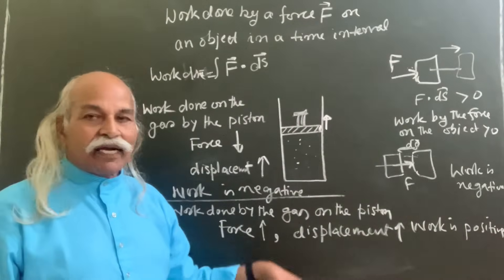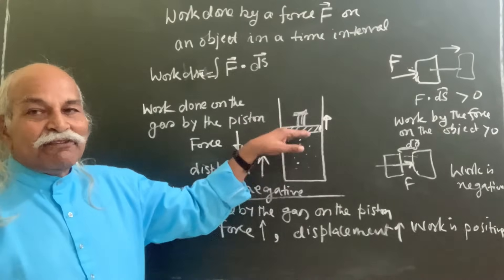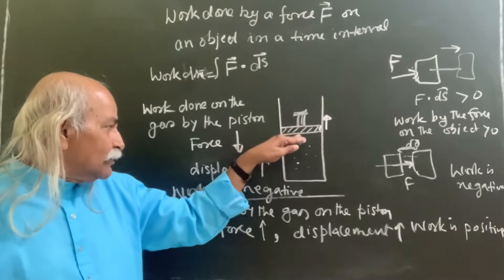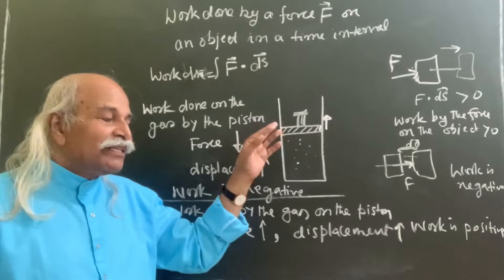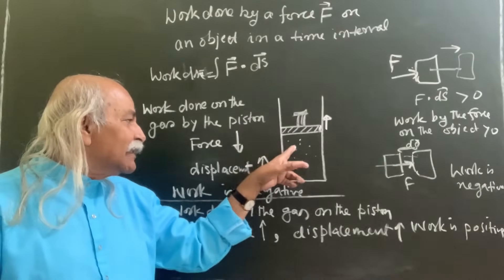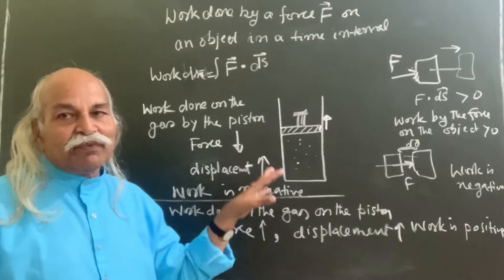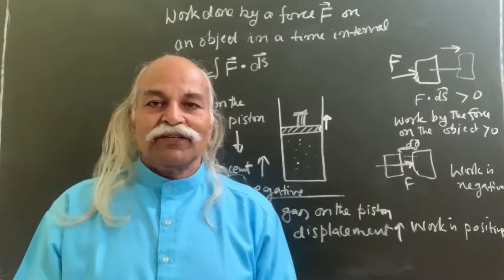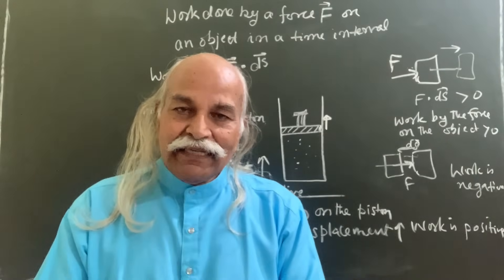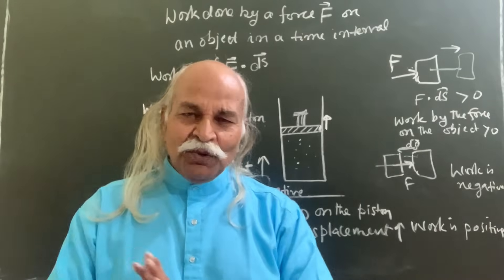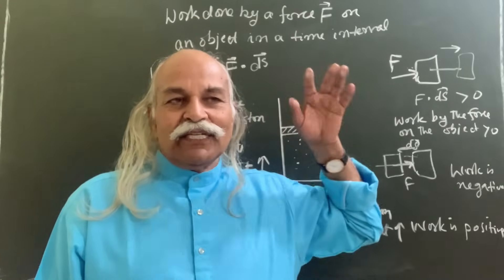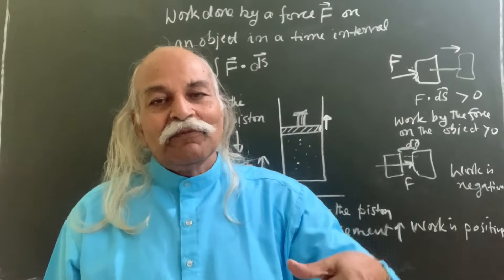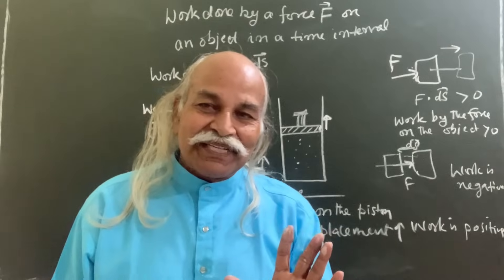And similarly, if the gas is being compressed, in that case the piston and gas layer are going down. Depending on whether you are interested in work done by the gas or by the piston, you decide what is positive and negative. This is how work in the first law of thermodynamics is to be decided. It's your choice — no conventions. Whether you want to calculate work by the gas on the piston or by the piston on the gas, that you decide.